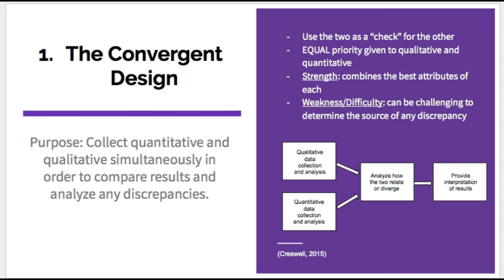These two are used to offset, complement, and further explain one another. Within a convergent study, the researcher collects both qualitative and quantitative data separately and simultaneously, and then analyzes them separately. From there, the researcher is able to compare the two datasets and draw conclusions about how the two support one another, or how they diverge. This form of study supplies equal priority to both quantitative and qualitative. A strength is that it combines the best attributes of both. The difficulty is that it's sometimes hard to merge the two and explain the findings without further study.